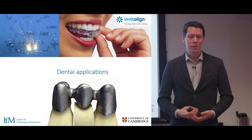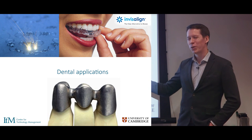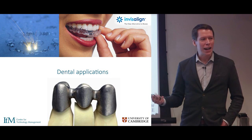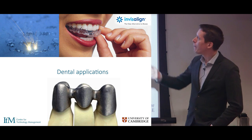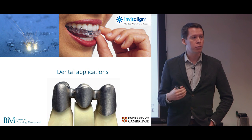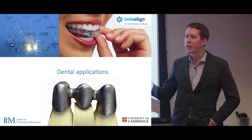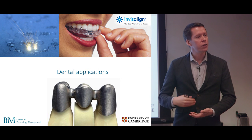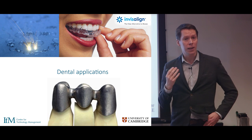In dental applications, crowns can now be manufactured using 3D printing, though post-processing is still needed to add the enamel finish. For dental alignment, Invisalign is an interesting step forward — a scan is made of your mouth and teeth, a 3D-printed mold is produced, and clear alignment plates are made around it. Every couple of weeks you get a new one, gradually correcting your teeth in a much more attractive way than traditional metal braces.